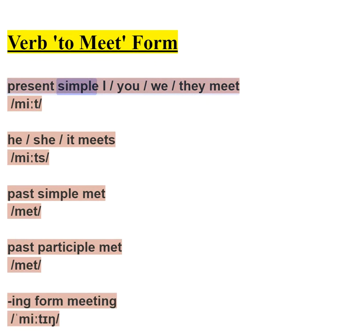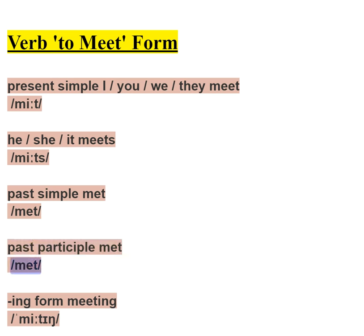Verb to meet forms: present simple — I, you, we, they meet; he, she, it meets. Past simple — met. Past participle — met. -ing form — meeting.